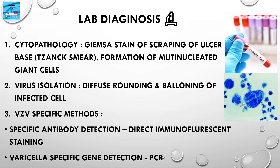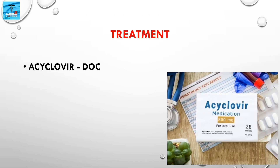VZV-specific methods include specific antigen detection by direct immunofluorescent staining, and PCR to detect VZV-specific genes. Regarding treatment, acyclovir is the drug of choice in case of Varicella Zoster Virus infection. It can prevent complications of chickenpox and halt the progression of zoster in adults, but it cannot prevent post-herpetic neuralgia.